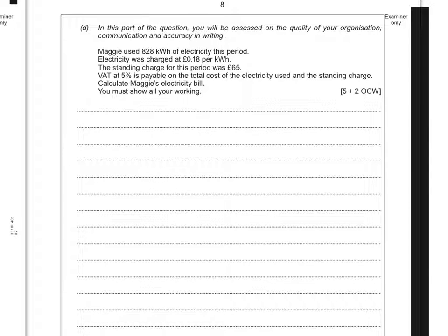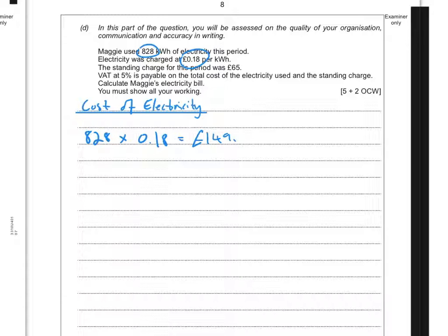So first of all, 828 units used at 18 pence - 828 kilowatt hours used at 18 pence per kilowatt hour. The first thing you're going to work out is the cost of the electricity. I'm going to work out 828 times 0.18 because I want to keep my answer in pounds, or you can work it out as times 18 and then divide it by 100. So 828 times 0.18 should give you an answer of £149.04.